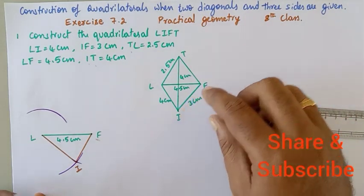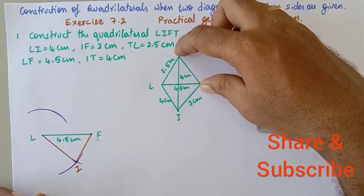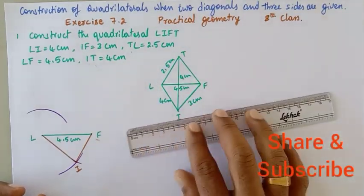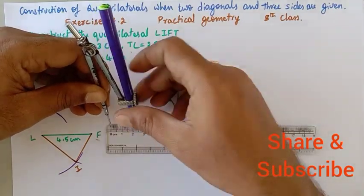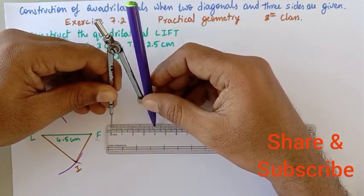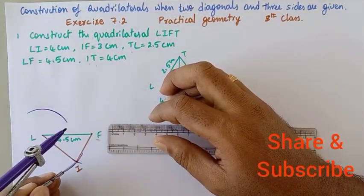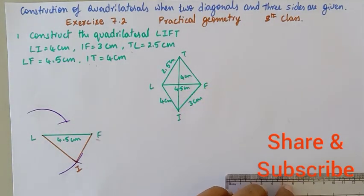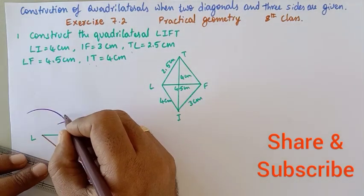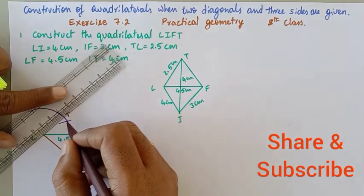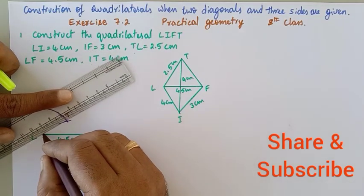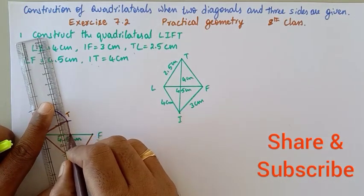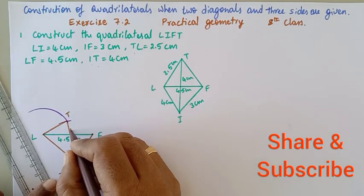Next, we do not know the length of TF, so we will take the length of IT which is equal to 4 cm. I will adjust the compass to 4 cm, and from I, I will cut an arc on the previous arc to get point T. I will join LT and IT. IT measures 4 cm, IF measures 3 cm, LI measures 4 cm, and LT measures 2.5 cm.